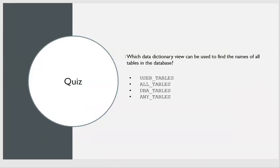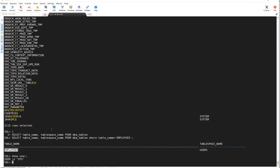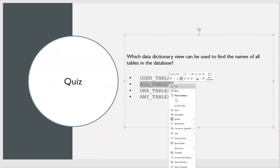Quiz time: which data dictionary view can be used to find the names of all tables in a database? The options are: any_tables, dba_tables, all_tables, or user_tables. There is no 'any_tables' view. The answer is dba_tables — if you have DBA privilege and run dba_tables, you will see all tables in the database.